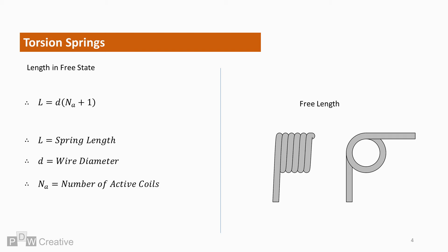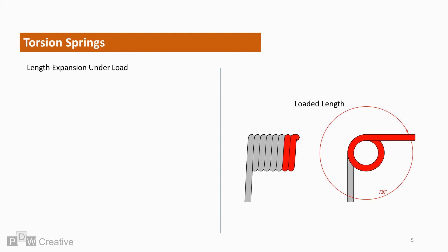We'll go over active coils later in this video. When one of the spring arms is loaded or rotated in line with the direction that the coils were formed during manufacture, the length increases.